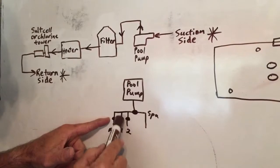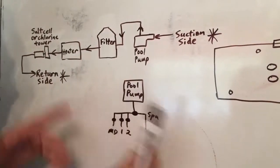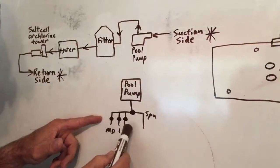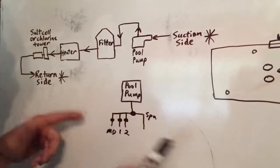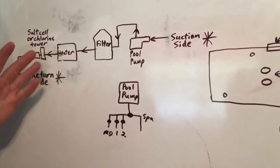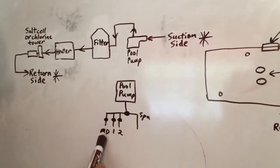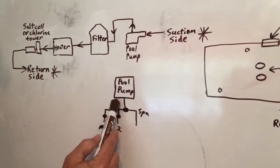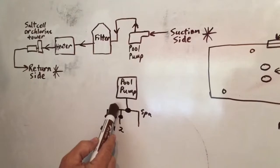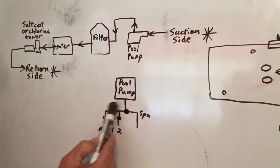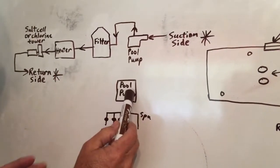In the old times, sometimes they'd put the skimmer and the main drain together, which is not good. You can't control anything. You can't get more suction when you're trying to vacuum. It's more common to do it like this now. So you have a main drain, the pipe coming up, and then skimmer one, and then skimmer two coming in. And this is going to be in front of the pool pump.